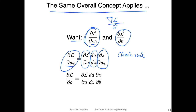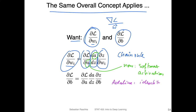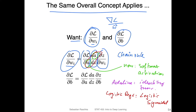The only difference compared to regular logistic regression is that we now have the softmax activation. In Adaline we had an identity function as activation, and in regular logistic regression we had the sigmoid or logistic sigmoid as activation. So the only thing that really changes is that we have a different activation function. Equivalently, we can also compute the partial derivative of the loss with respect to the bias — it's the same concept.